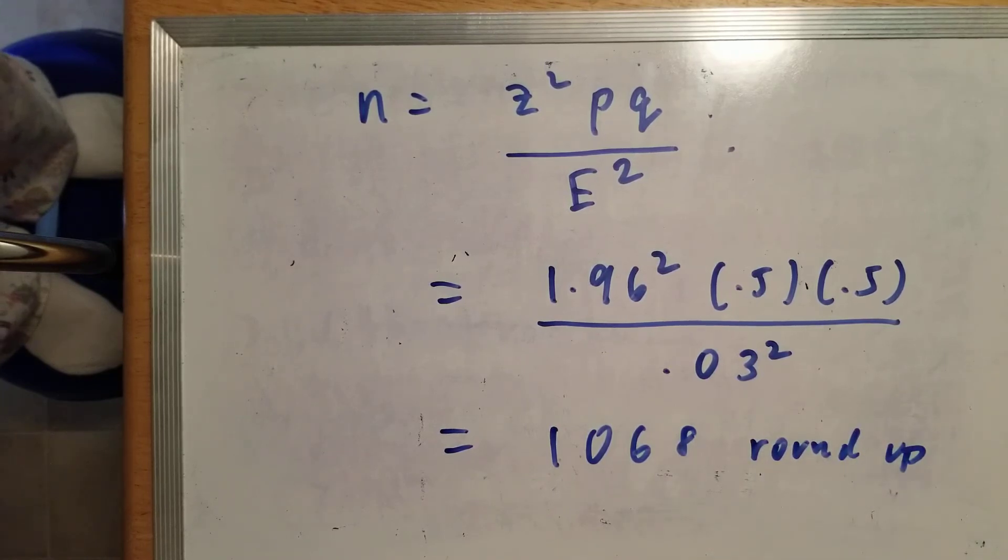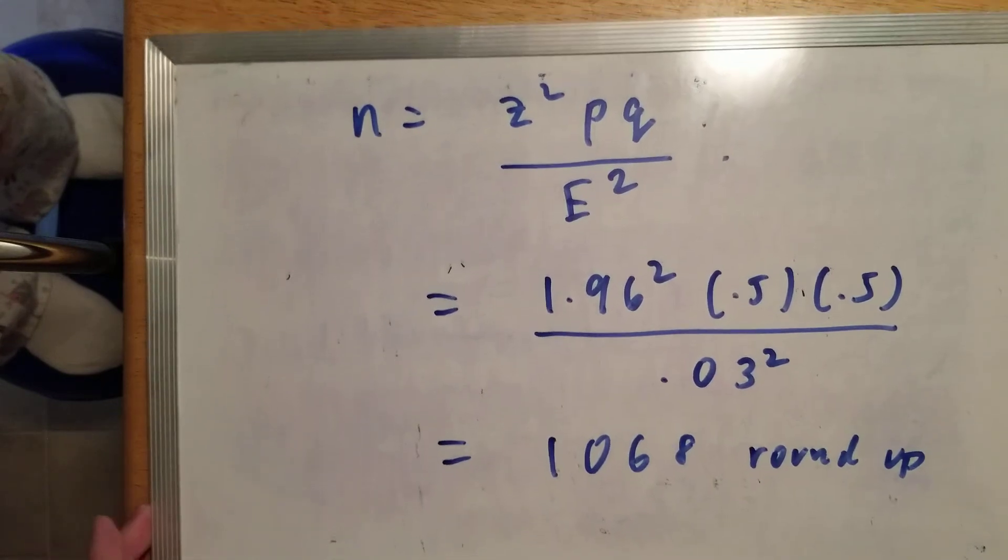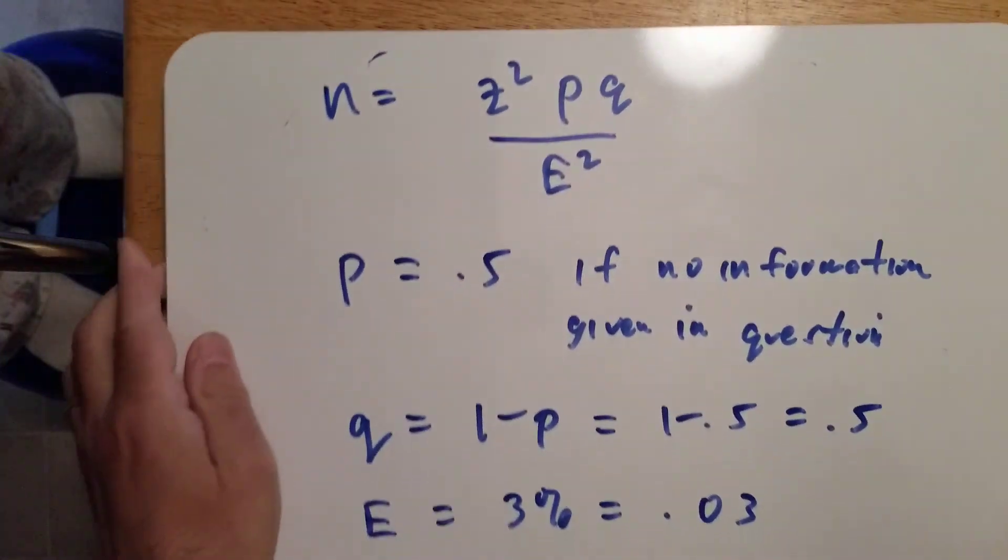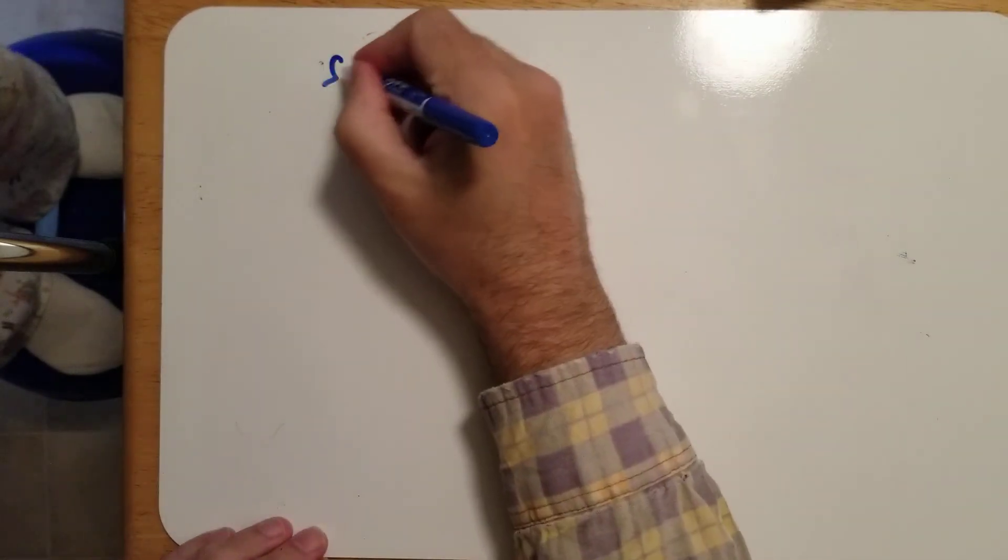There's one more thing about this. Sometimes they'll give you an estimate for P. In that case, the formula is a little different - it's the same formula, but you're using a different value for P. Sometimes they might ask the question this way. Same exact question.